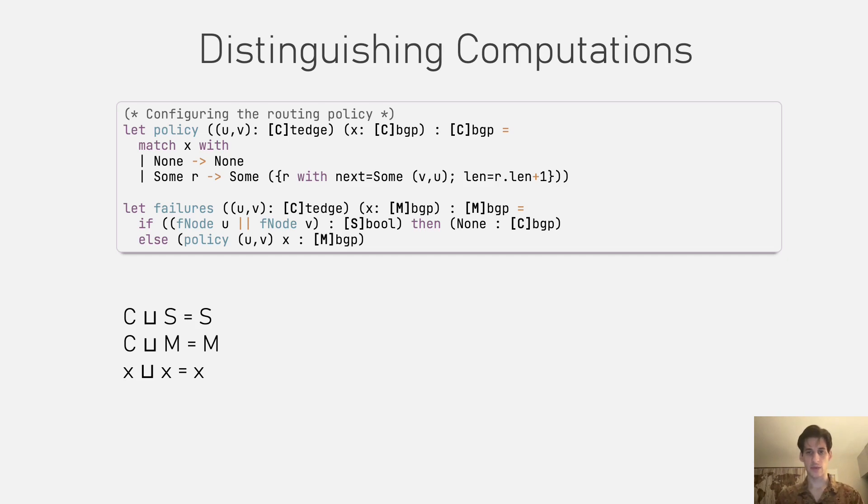And similarly, you can combine a concrete and a multivalue just by applying the concrete computation on the leaves of the multivalue. And obviously, every mode is compatible with itself. But the key idea is that multivalue computations and symbolic computations are incompatible. You can't use one where the other is expected.